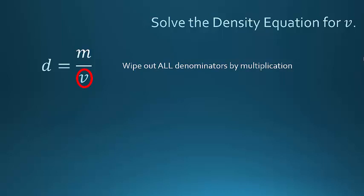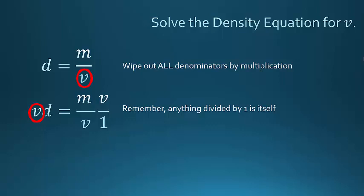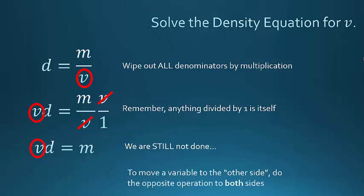In order to solve for something when I've got fractions involved, the first thing I like to do is wipe out all denominators by multiplication. So my denominator is V, so I'm going to multiply both sides of this equation by V. So my left-hand side simply becomes V times D. My right-hand side is still the M divided by V, but now I'm multiplying the right-hand side times V over 1. Anything divided by 1 is itself. I don't like to mix fractions and non-fractions when I'm multiplying because I get all confused. Now I can easily see that the V's divide out. So what I finally end up with is VD equals M. Oh wait, we're still not done. I need to solve for V. So I have V times D. Again, I'm going to do the opposite operation. So I'm going to divide both sides by D. And finally, I've got V is equal to M divided by D.